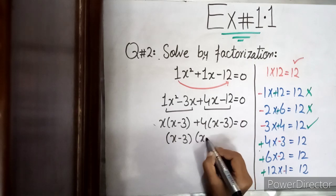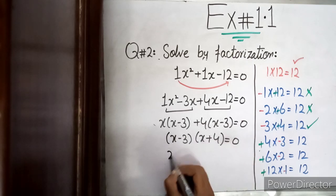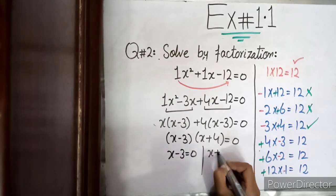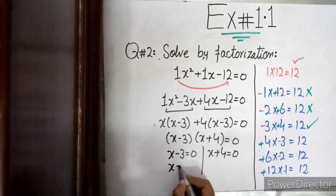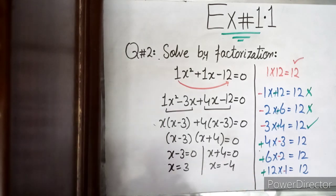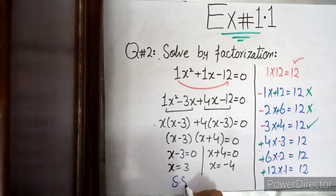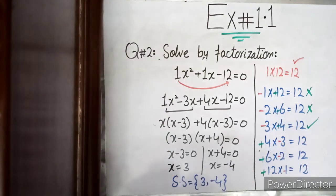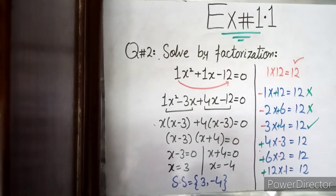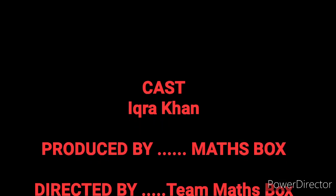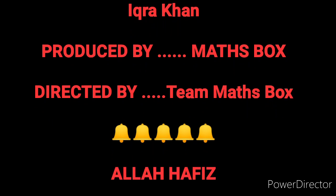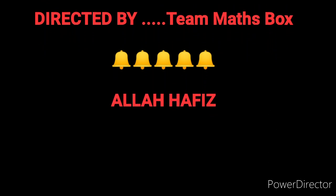Taking common from each pair: x common from first pair gives x(x minus 3), and 4 common from second pair also gives 4(x minus 3). So (x minus 3)(x plus 4) = 0. Therefore x = 3 or x = minus 4. Solution set is {3, minus 4}. This was Exercise 1.1, Unit 1, 10th class Science Group Mathematics. We hope today's lecture was clear — if not, come to the comment section. Please press the bell icon. Allah Hafiz.